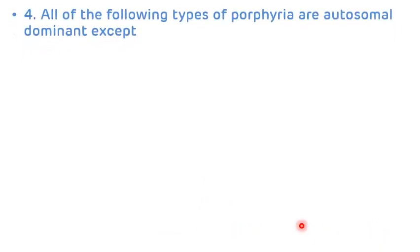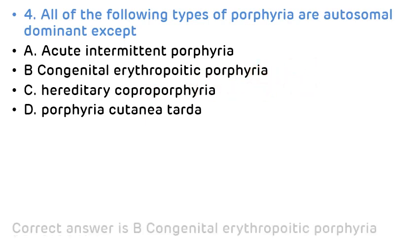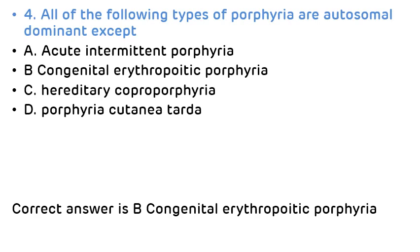Fourth MCQ: All of the following types of porphyria are autosomal dominant except? Options: acute intermittent porphyria, congenital erythropoietic porphyria, hereditary coproporphyria, porphyria cutanea tarda. The correct answer is congenital erythropoietic porphyria, which is inherited as autosomal recessive.